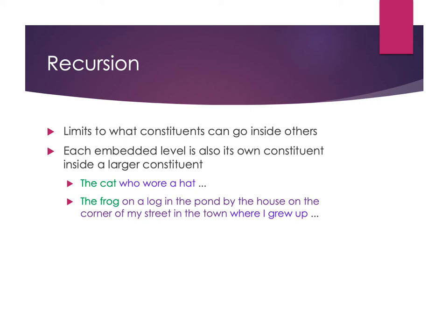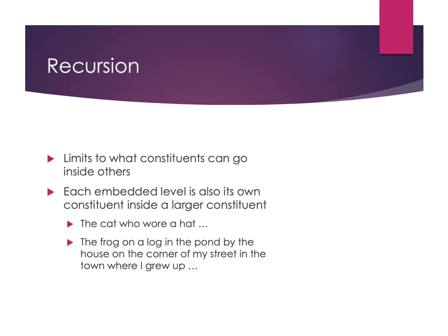An example would be 'the professor likes the book about the boy at the school of history,' where we have all of these different levels embedded inside the sentence — a noun phrase inside a prepositional phrase, that prepositional phrase part of a larger noun phrase, which is part of a larger prepositional phrase, and so on. Or from the first day of class, 'the frog on a log in the pond by the house on the corner of my street in the town where I grew up.' We have a determiner, a noun, and then a series of prepositional phrases all embedded inside, linking to additional information about the frog, plus another embedded clause.